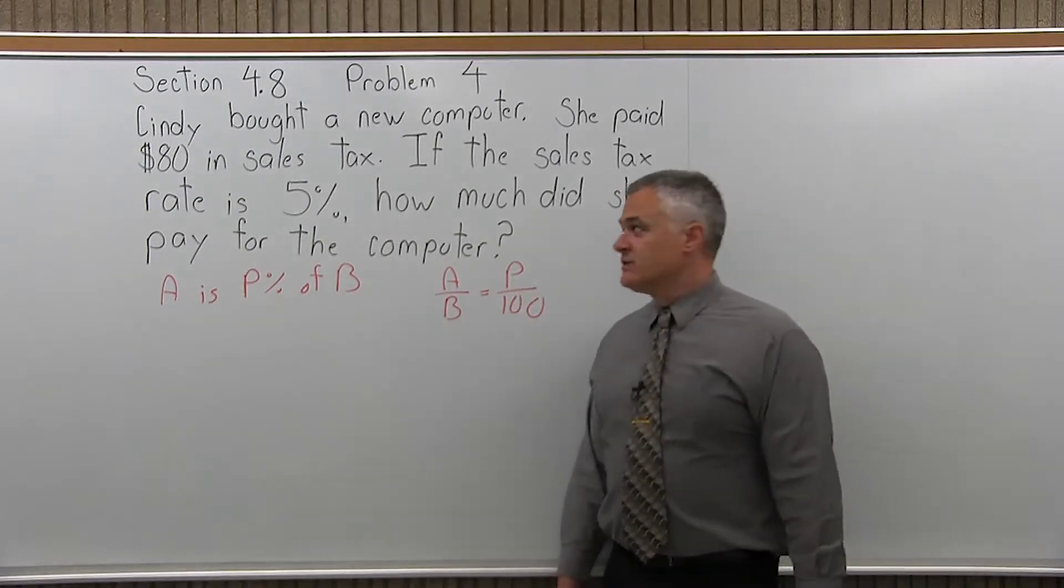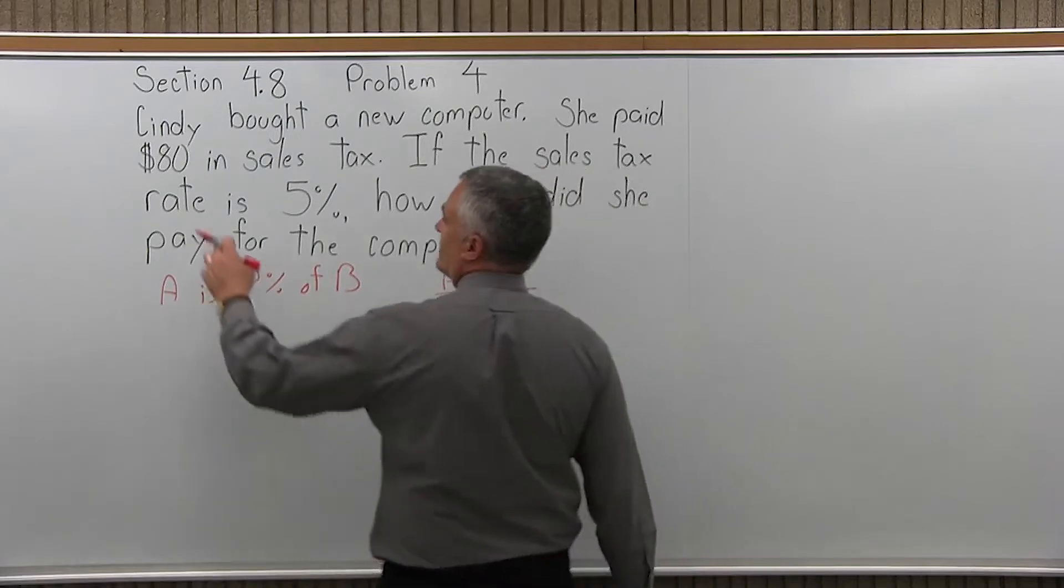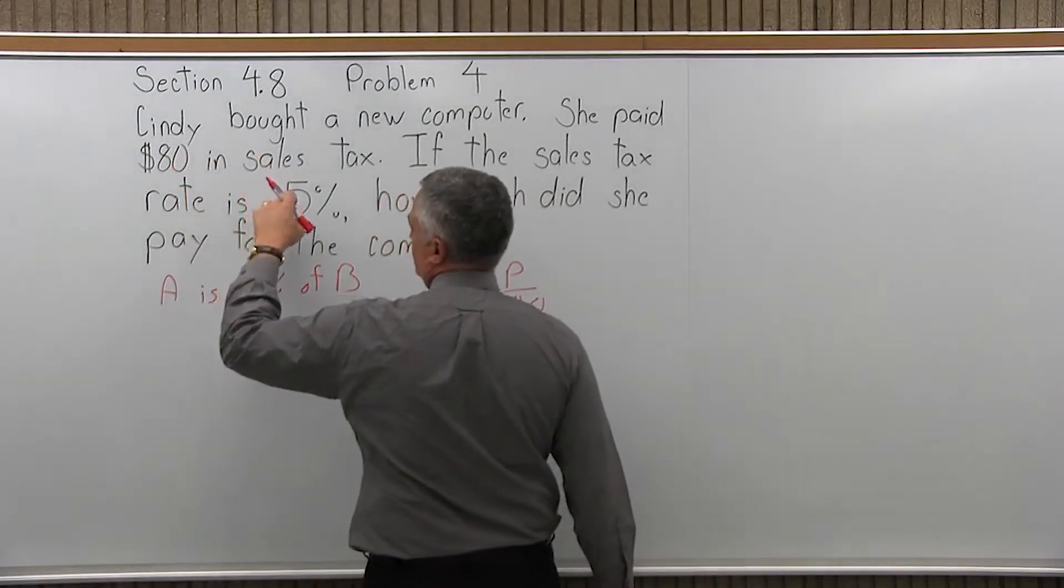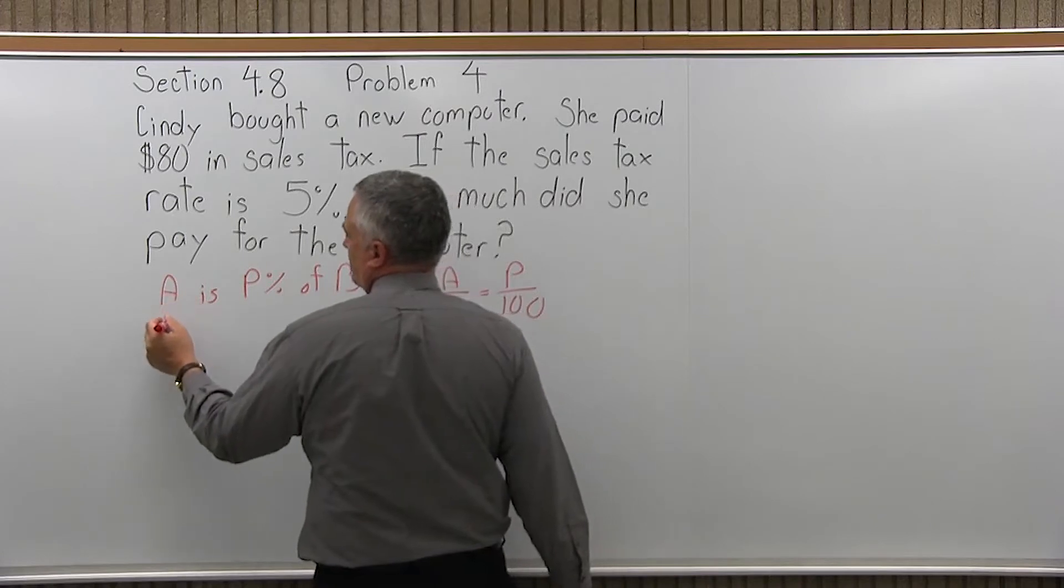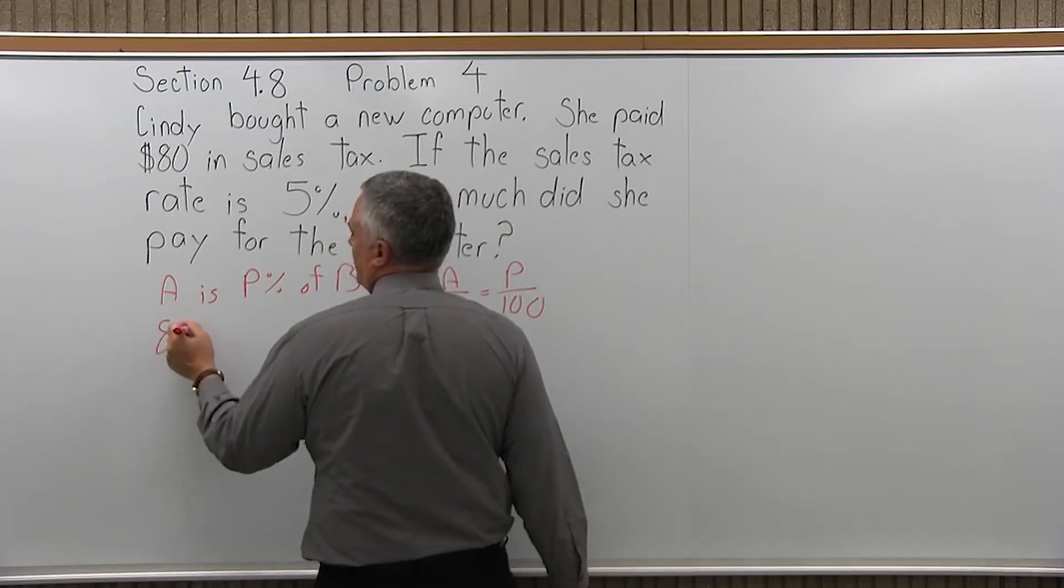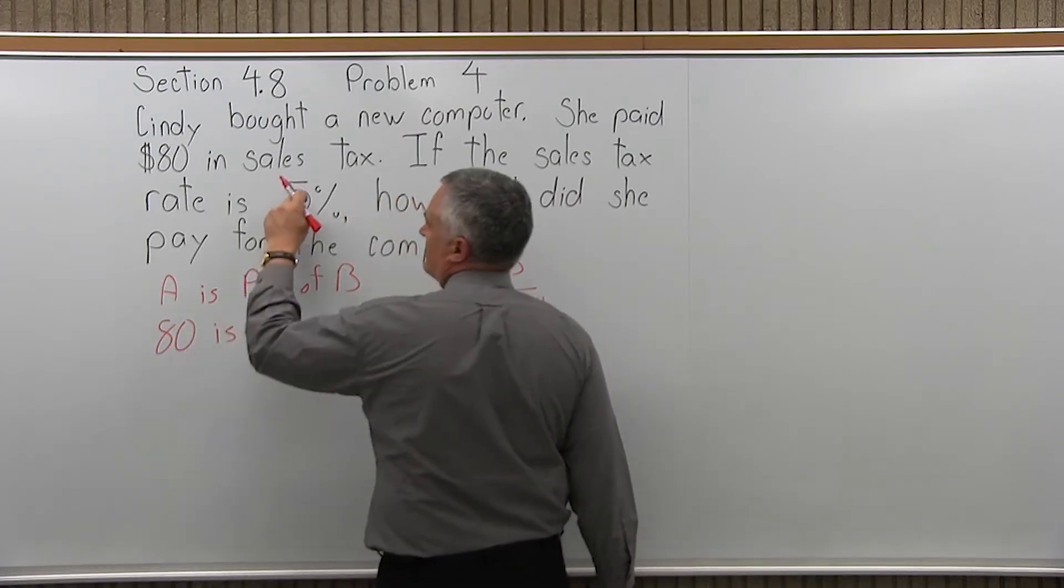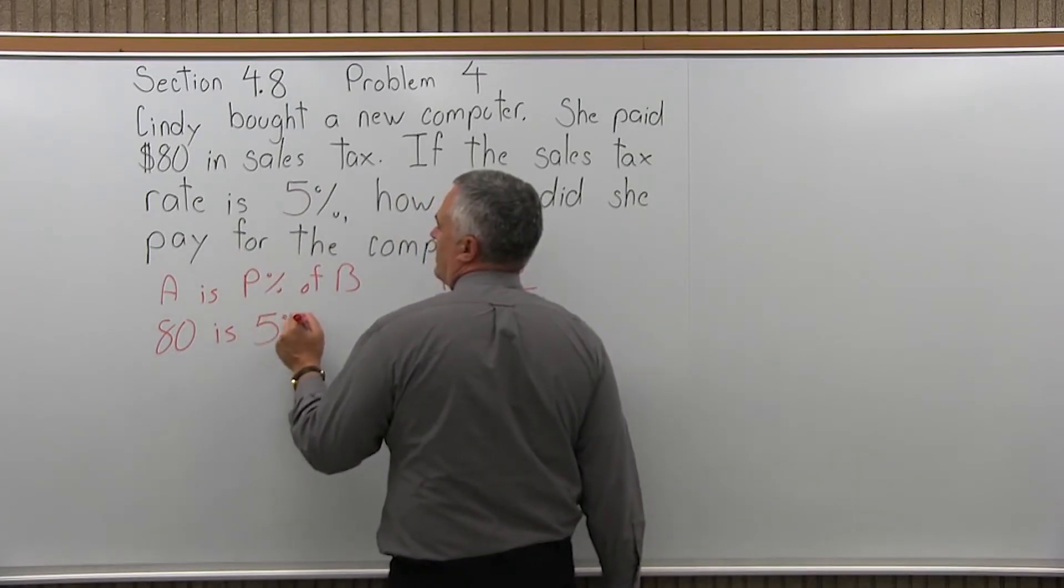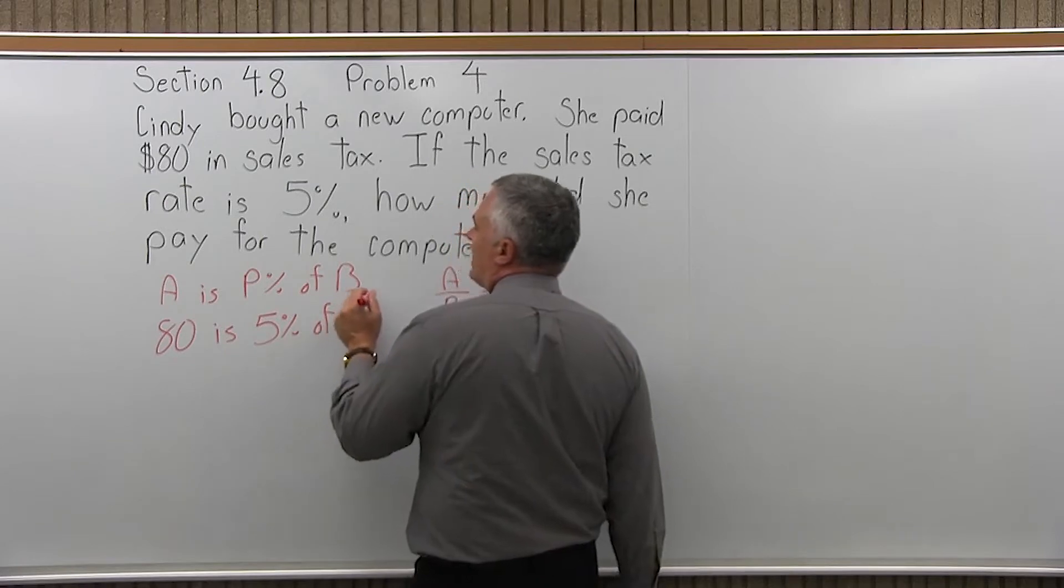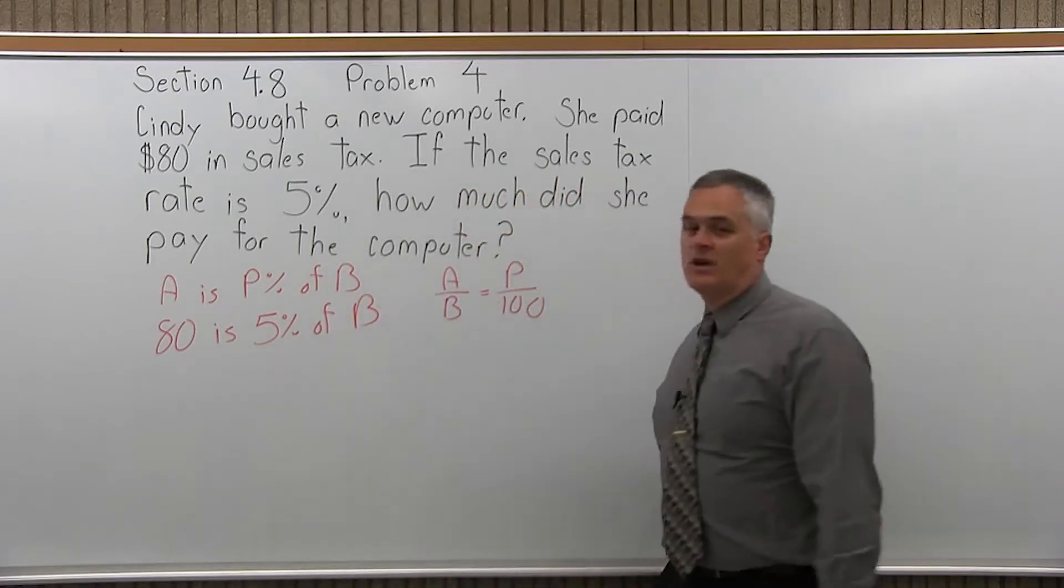And I can write it in this form. So, the $80 is 5% of some bigger number of the total price of the computer. So, the A is the 80, the P is 5%, and the B is the unknown number, so it will stay as a variable, as B.